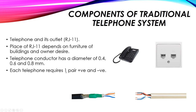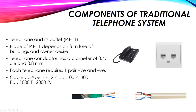Each telephone requires one pair — one positive and one negative conductor — so one pair equals two conductors. The cable carrying all telephone pairs can be one pair, two pair, 100 pairs, 300 pairs, 1000 pairs, 2000 pairs, and so on. The number of pairs represents the number of telephone lines, so for example if we have 100 telephones in a building, we need a 100-pair cable, with each pair providing one telephone line connection.